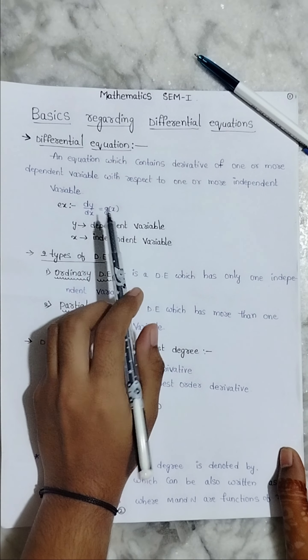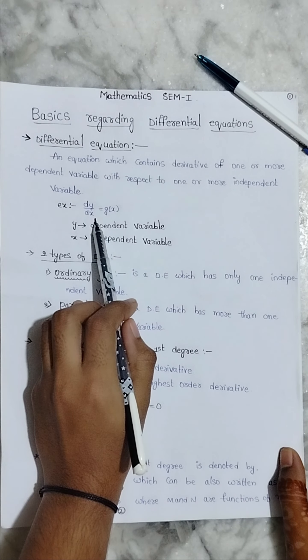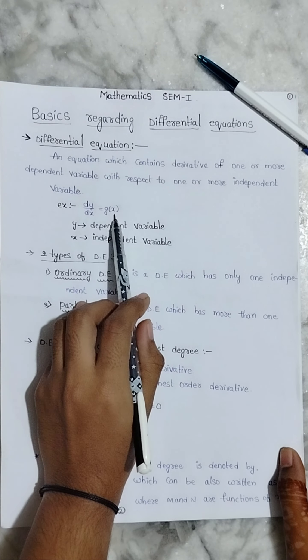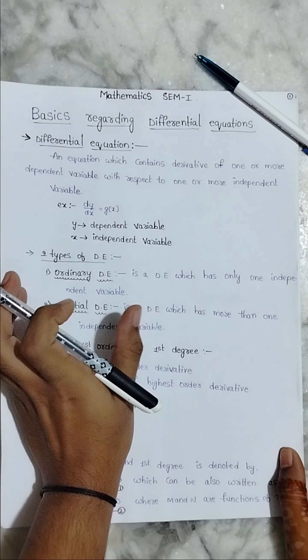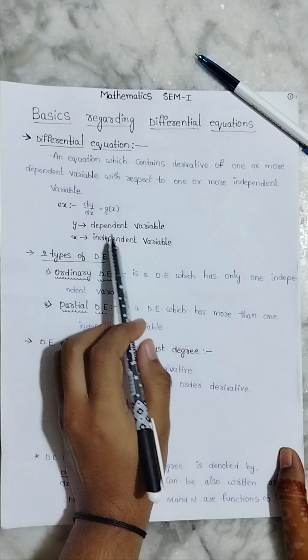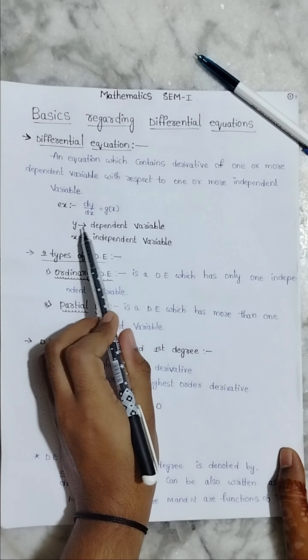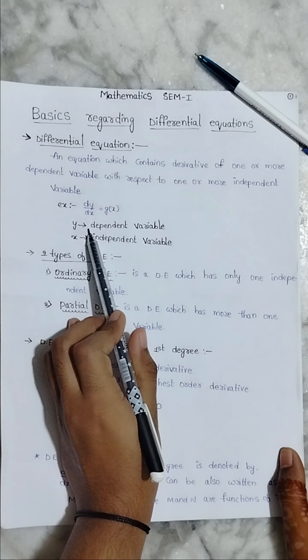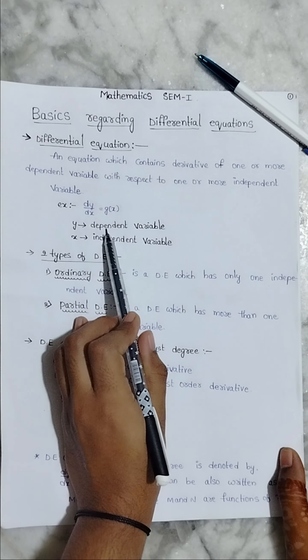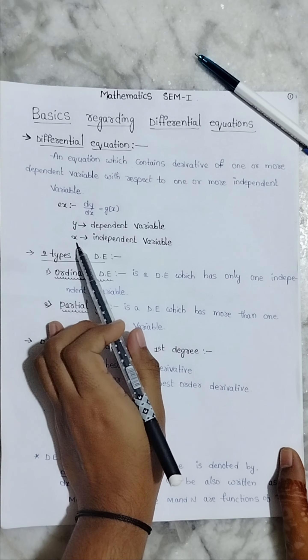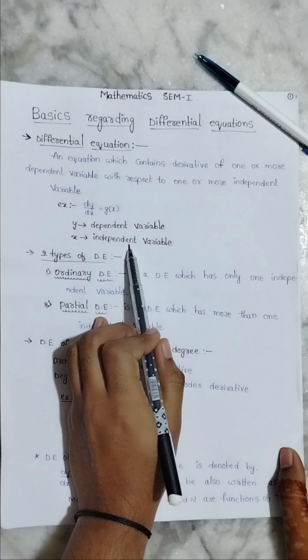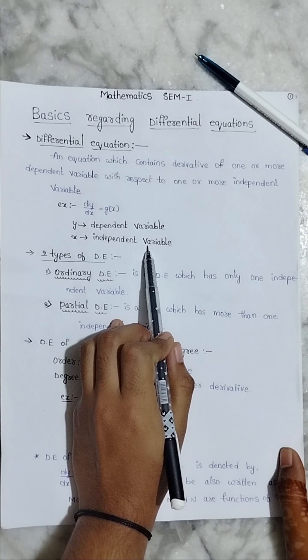This is an example: dy by dx equals to f of x. This is an equation. Here, y is a dependent variable and x is an independent variable.